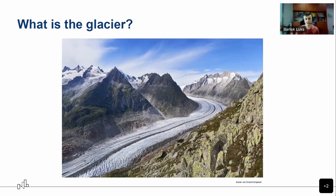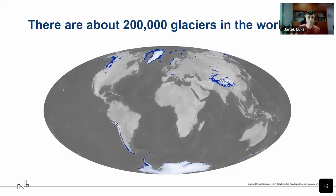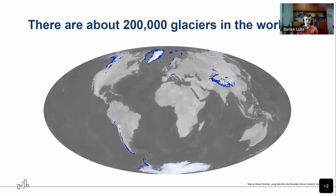If they are not moving, then they are not glaciers anymore. It could be at a very slow pace, but they need to move. There are about 200,000 glaciers in the world, which is surprising for many people. They cover almost all the continents — both Americas, Europe, Asia, even Africa. There are no glaciers in Australia, but there are glaciers in Oceania.